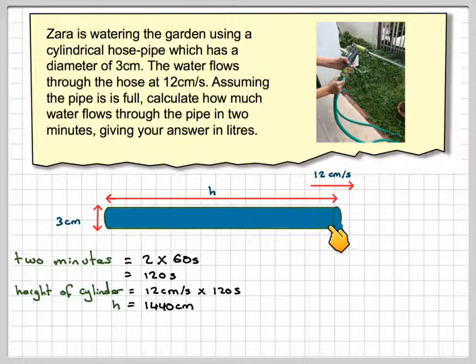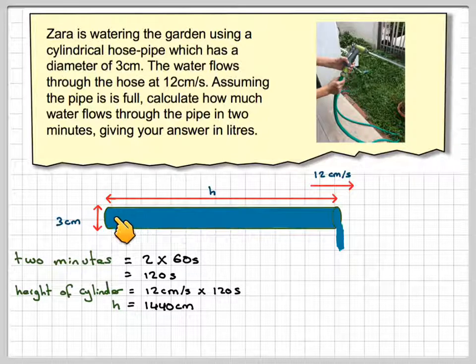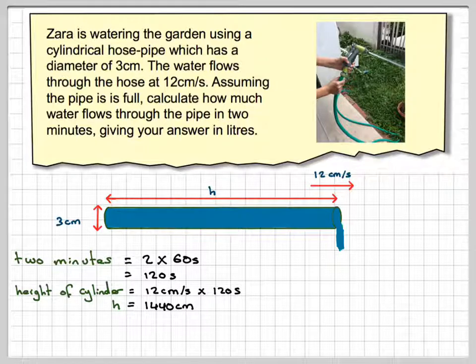So, in 120 seconds, this length here of 1440cm water will flow out of this cylinder, of this hose pipe. Therefore, this is the volume of water that we need to calculate.